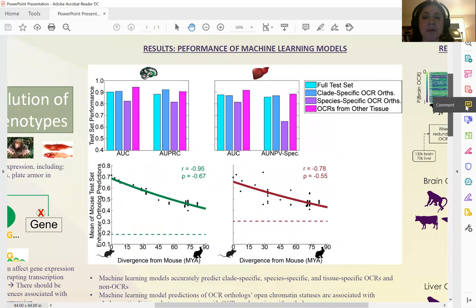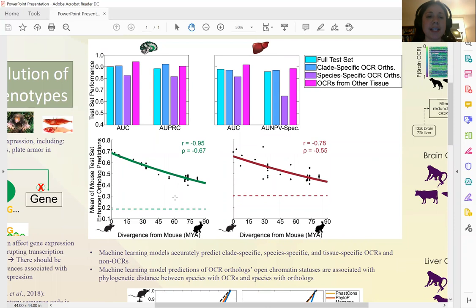We found that our models worked well, not only overall, but also on specific tasks that were designed specifically to study models for gene expression evolution. This includes our models working well on clade-specific open chromatin orthologs, species-specific open chromatin orthologs, and tissue-specific open chromatin regions.